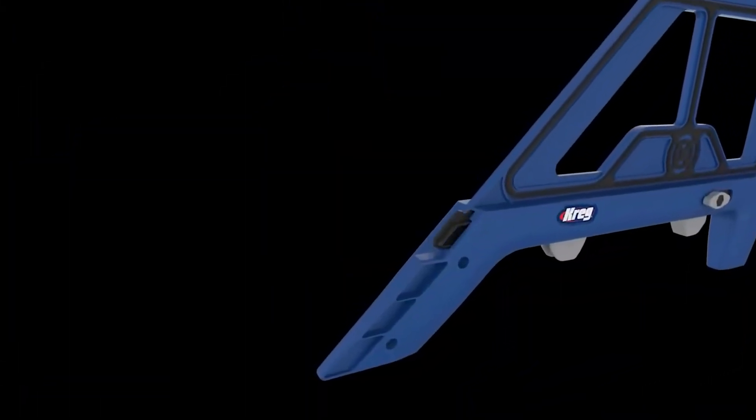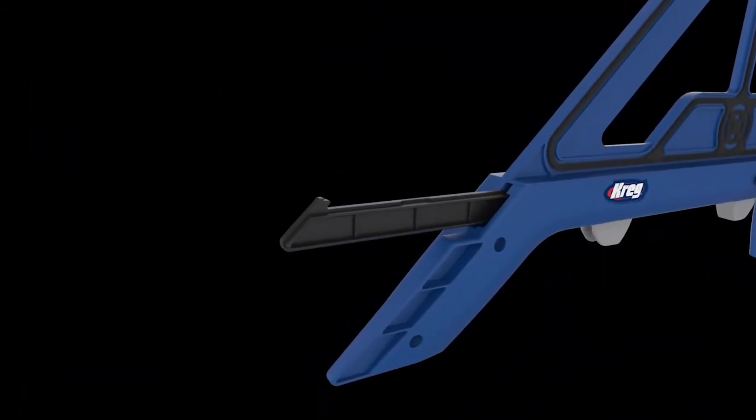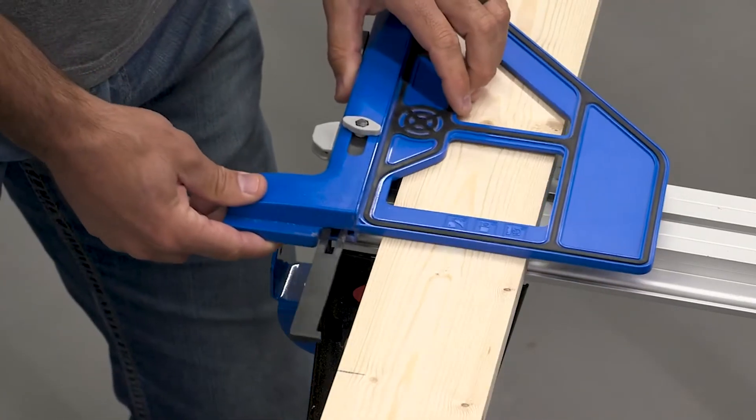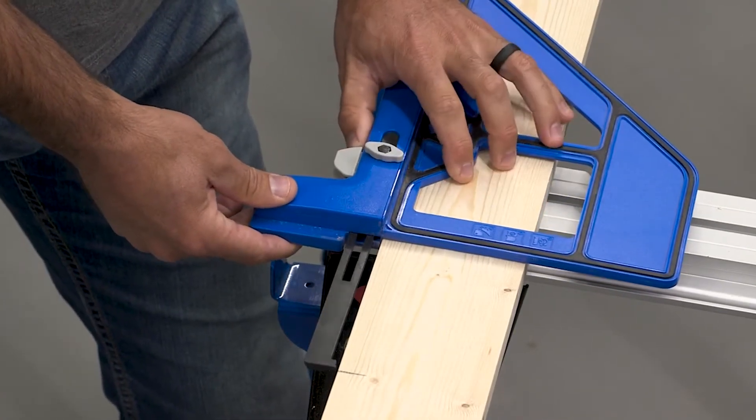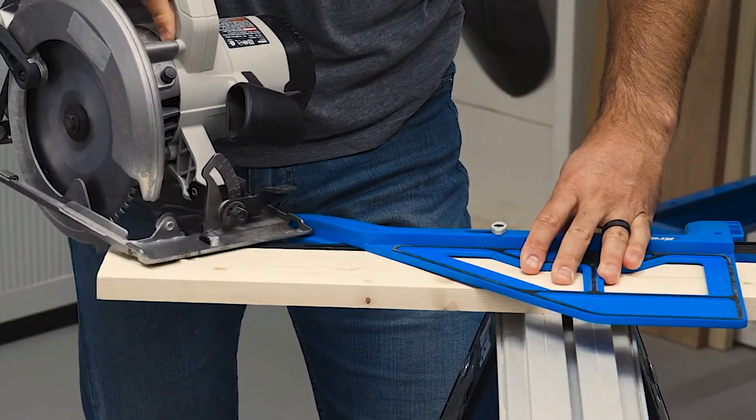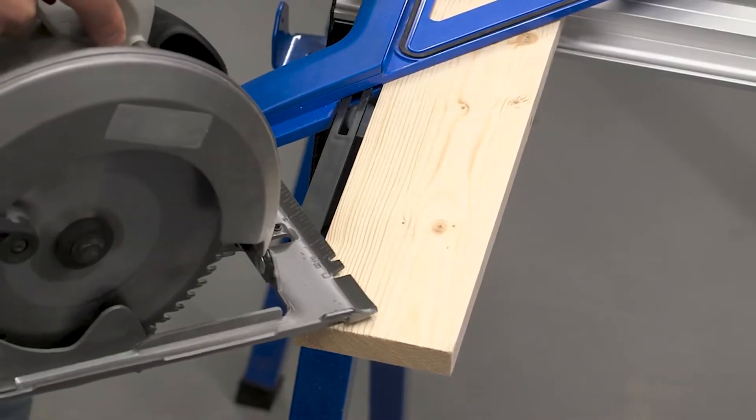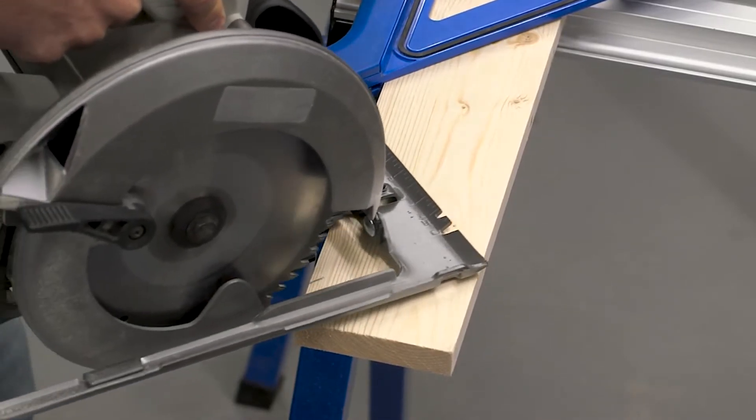The portable crosscut's capabilities start with retractable cut line indicators that position the guide precisely so you know exactly where your saw blade will cut. The indicators easily adjust to match your saw so all you have to do is align the indicator with your cut line and you know the portable crosscut is perfectly positioned to cut at that exact location.